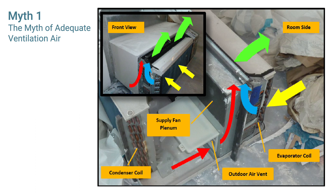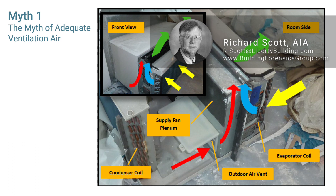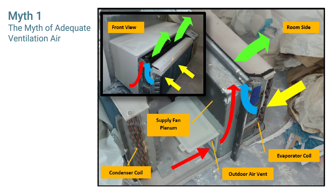In a hot humid climate, wouldn't keeping the door closed prevent outside air from coming in and avoid the humidity problem? Yes, that would be one way, but as discussed in this presentation, we expect the PTAC — in the absence of any other makeup air system — to provide both code-required ventilation and positive pressurization of the room. With the door closed, that won't happen. However, even with the door open, you won't get the ventilation and pressurization required to adequately keep a room from having mold problems.